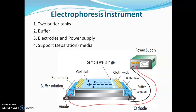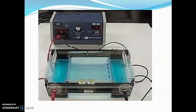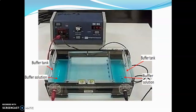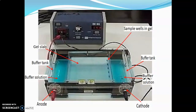This is the overall electrophoresis experiment. The actual instrument photograph shows buffer tanks with buffer solution, cathode and anode, and the gel slab mounted between the buffer tanks. The gel slab has sample wells, and finally there is a power supply battery.